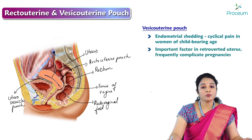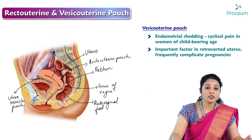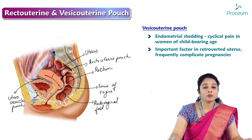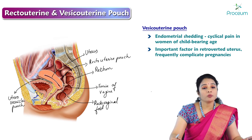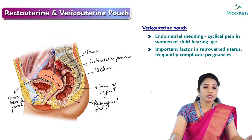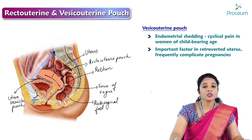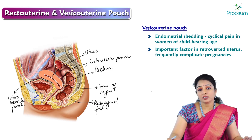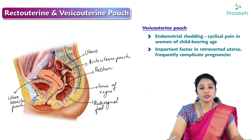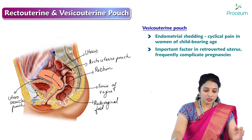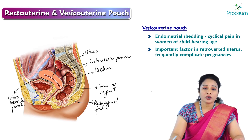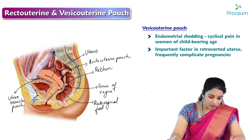This pouch is also an important factor in a retroverted uterus, because it can frequently complicate pregnancies. Normally the uterus is forward-bended, known as the anteverted uterus, but in a retroverted uterus this pouch becomes an important factor which can frequently complicate pregnancies. This completes the anatomy of the recto uterine and vesico uterine pouch.